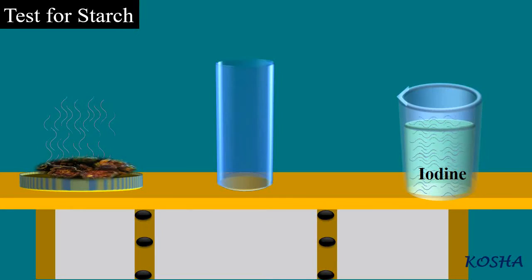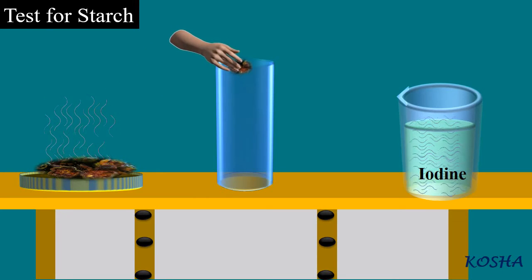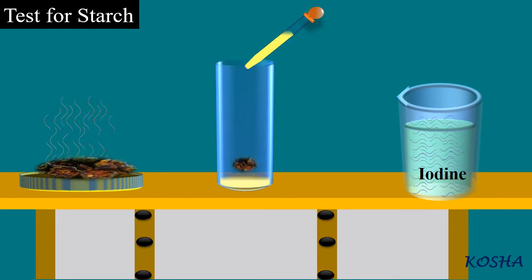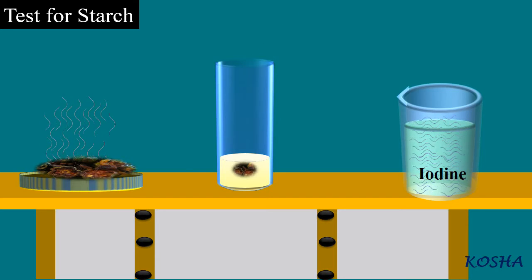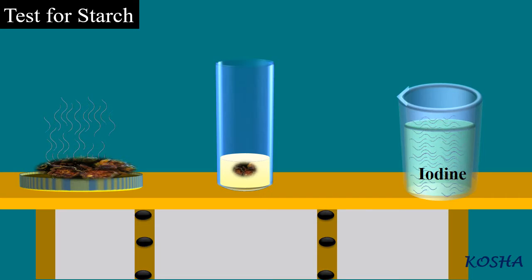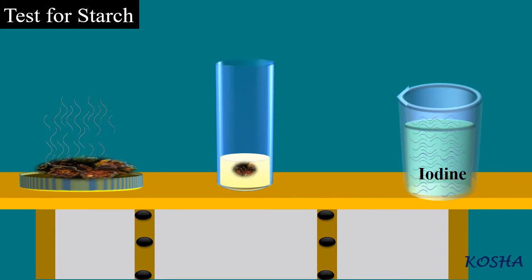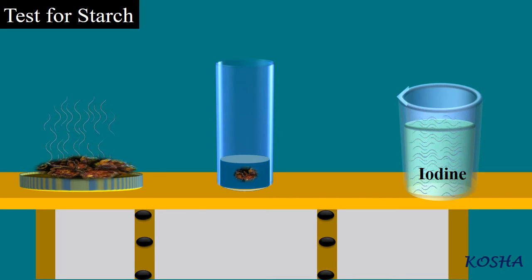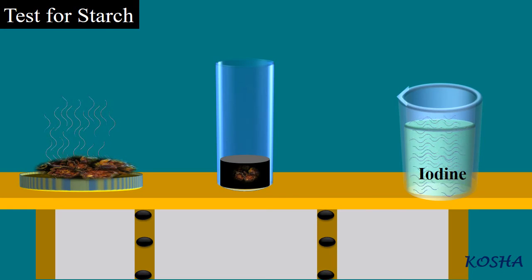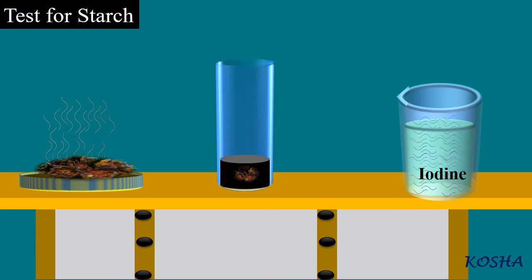Test for Starch: Take a small quantity of a food item or a raw ingredient. Put 2-3 drops of dilute iodine solution on it. Observe if there is any change in the colour of the food item. Did it turn blue-black? A blue to black colour indicates that it contains starch. Repeat this test with other food items to find out which of these contains starch.